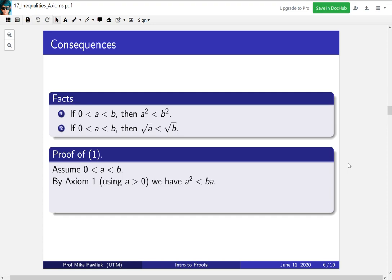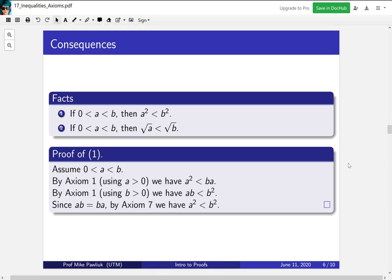Alternatively, we could use axiom 1, but on b instead. So we multiply through by b on the original inequality. That will give us ab is less than b squared. Now we combine these to get a squared is less than ab, which is less than b squared. So the major idea for this proof was that we start with our basic inequality, and we multiply through in two different ways.